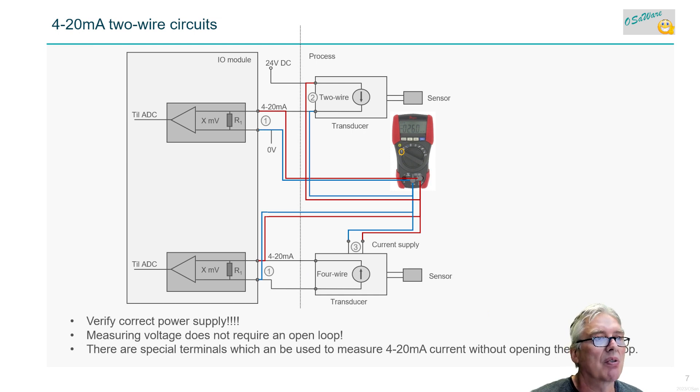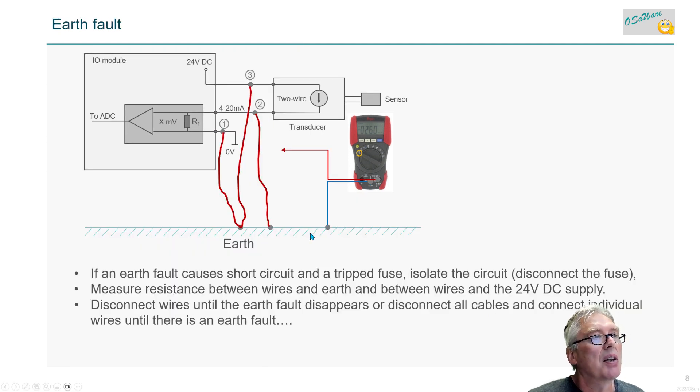Looking at earth faults - if you have those, you often get noise into your system, so you have to locate those. Measure voltage to earth. Maybe the fuse has tripped - disconnect the fuse and try to measure resistance between the earth and your wires. Maybe you can use the buzzer too if you're disconnected here.